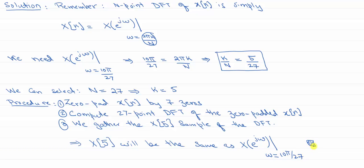Then X[5] will be the same as X of e to the j omega with omega equal to 10π over 27. The basic idea is: remembering the relationship between the DFT and the DTFT, we find the relationship between k over N that we need. We found N to be 27, so we zero-padded Xn by 7 zeros, computed the DFT, and looked at X[5].